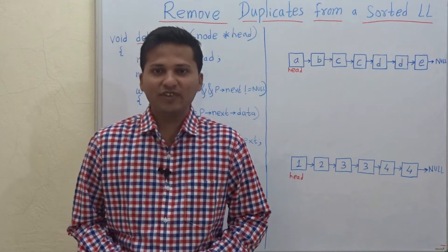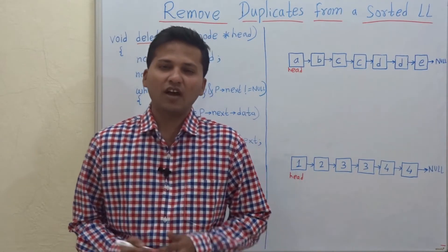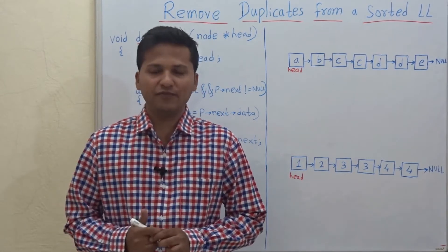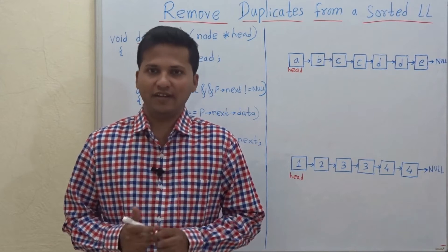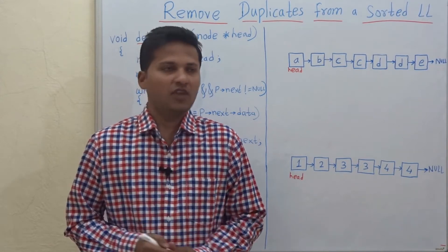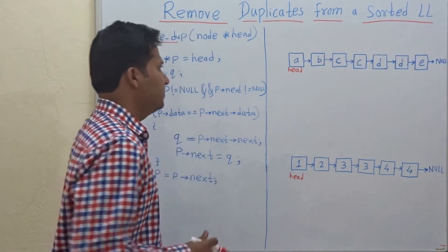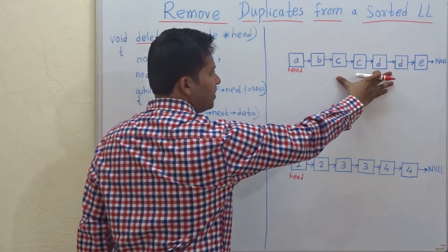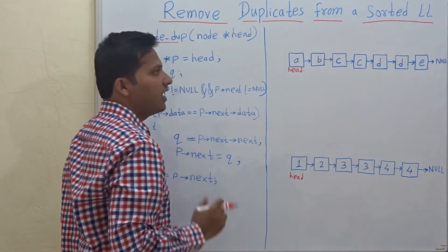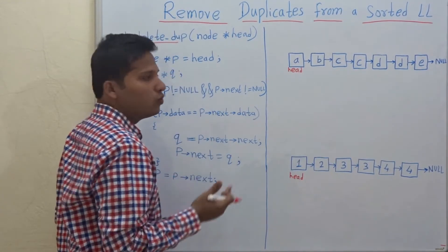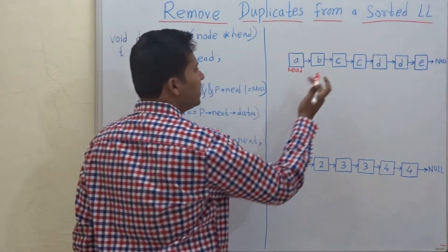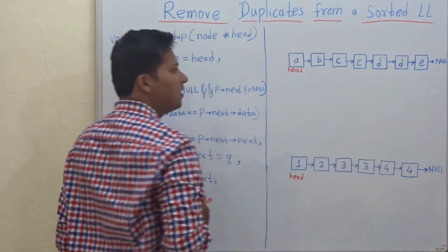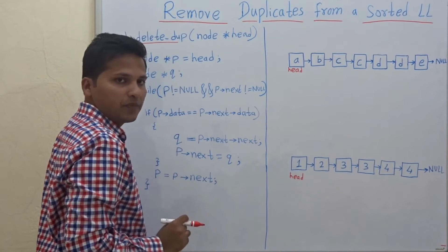Hello friends. Today we are going to see how to remove duplicate elements from a sorted linked list. So let's see — this is the sorted linked list and we want to remove the duplicate elements from it.